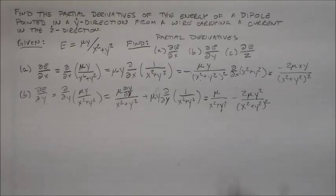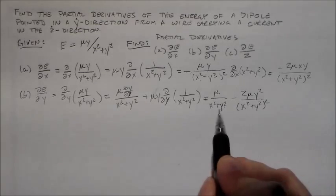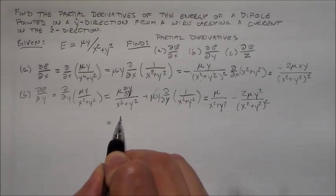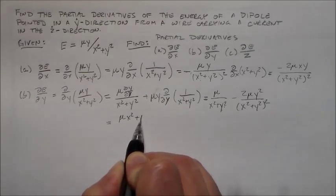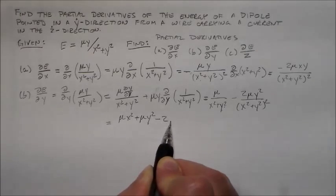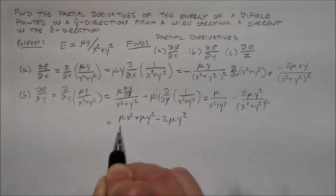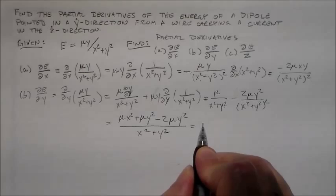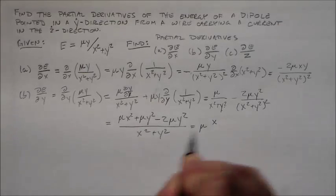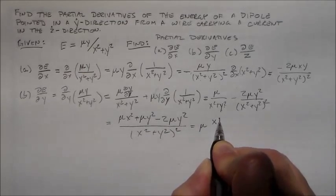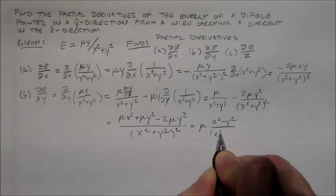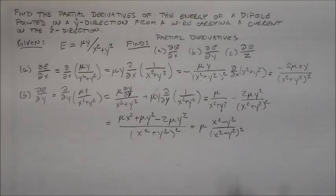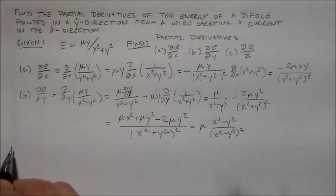And normally when we have an issue like this, what we want to do is we want to get the common denominator because that usually clears things up a little bit. So we have μ times x squared plus μ times y squared minus 2μ times y squared all over x squared plus y squared. And so we have μ times x squared minus y squared all over x squared minus y squared squared.